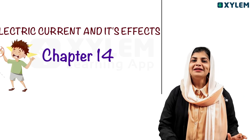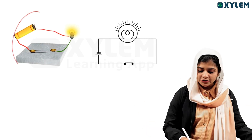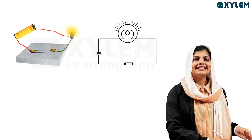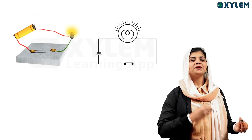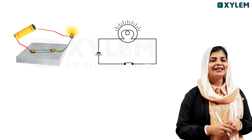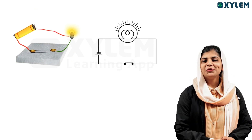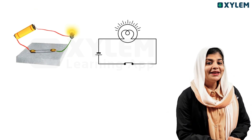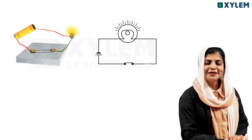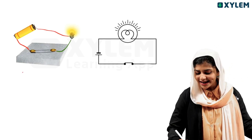In the textbook, we are going to do a figure. We are going to use a battery, a wire, and a bulb. We are going to connect them, and the bulb will glow.